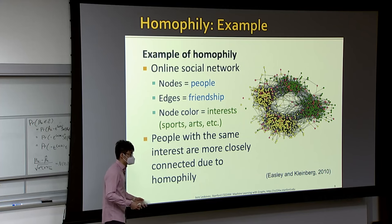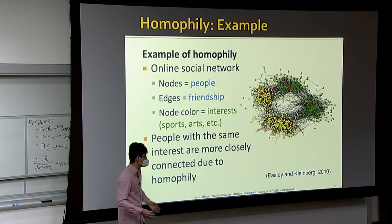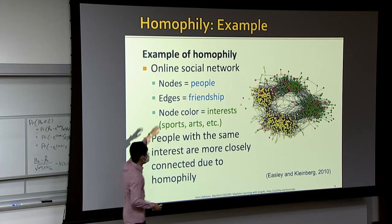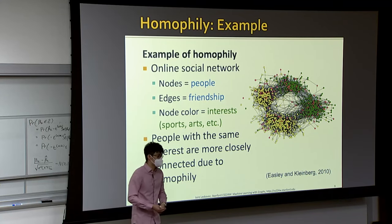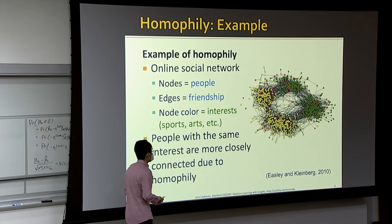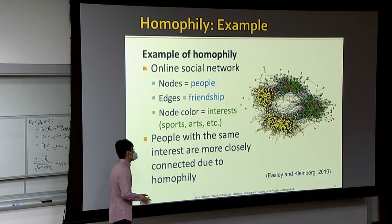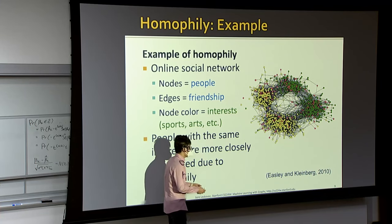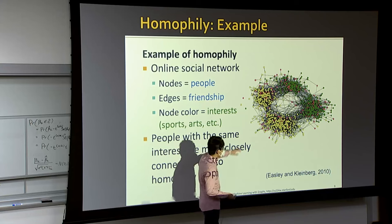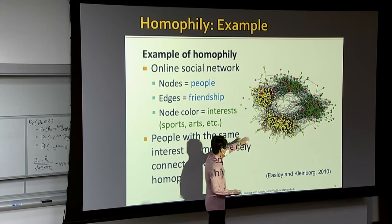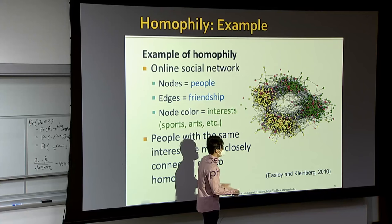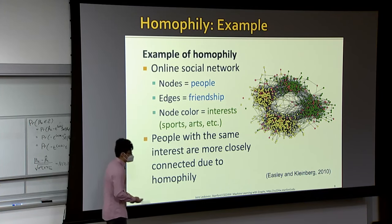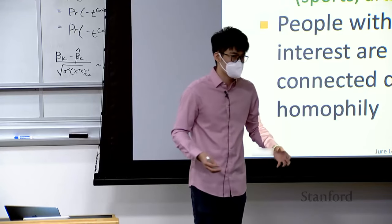Homophily is widely present in social networks. Here's a concrete visualization: a network built on people and their friendship relationships, where colors represent interests like sports or arts. Given this real-world network, we label each node by interest and can easily see that node colors cluster together — nodes sharing similar labels are closely connected. This is a concrete example of how homophily appears in real-world networks.